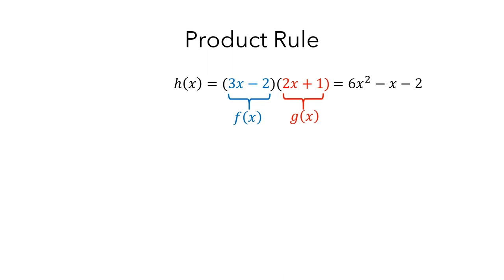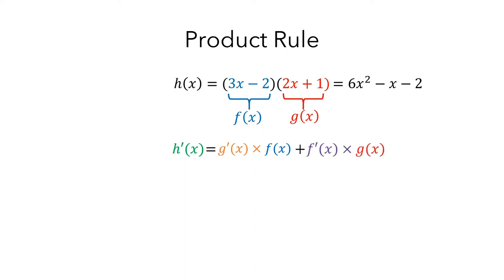The rule says: if h is the product of f and g, to compute the derivative of h, you first multiply the derivative of g by f, and then add to that the derivative of f times g.